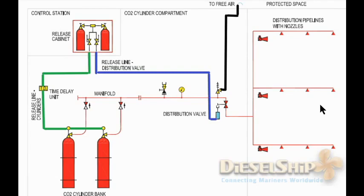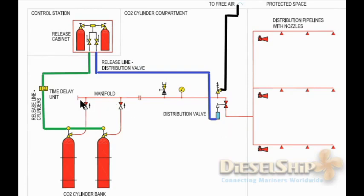There is a requirement that 85% of the CO2 has to be released within two minutes of operation. All the piping, nozzles, and diameters have been calculated so that this requirement is met. The details of the calculation — pipe diameter, length, thickness, etc. — can be found in the CO2 manual, and that is not the scope of this video.